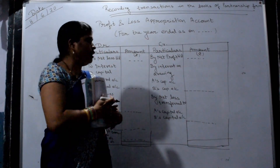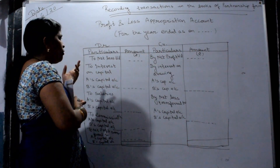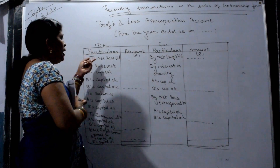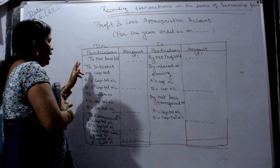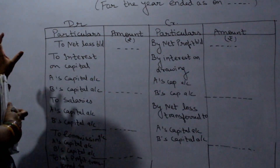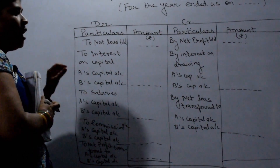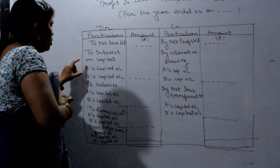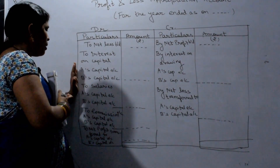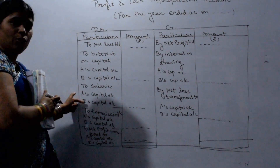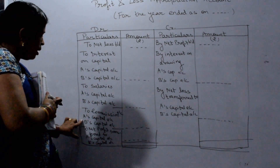If we have profit, we record net profit brought down on the credit side. If there is a loss, we record net loss brought down. On the debit side, we have interest on capital for each partner — partner A and partner B. We also record how much salary we are giving them and how much commission is being given to them.